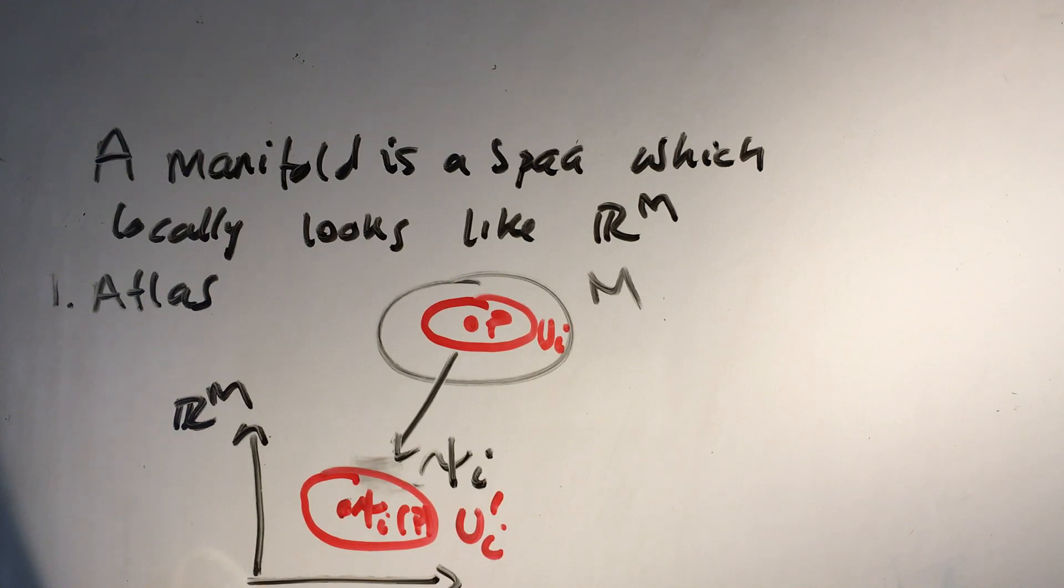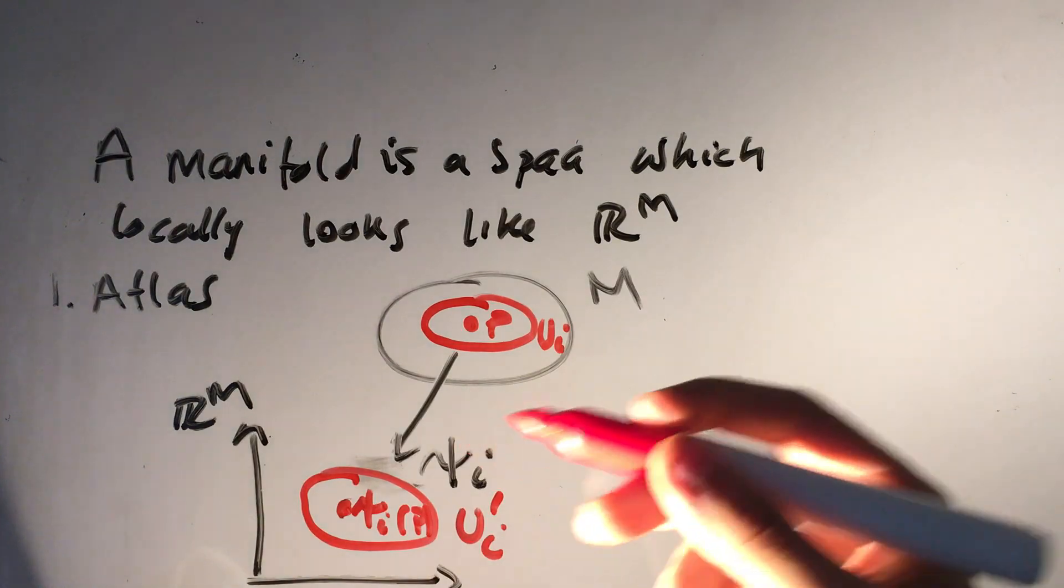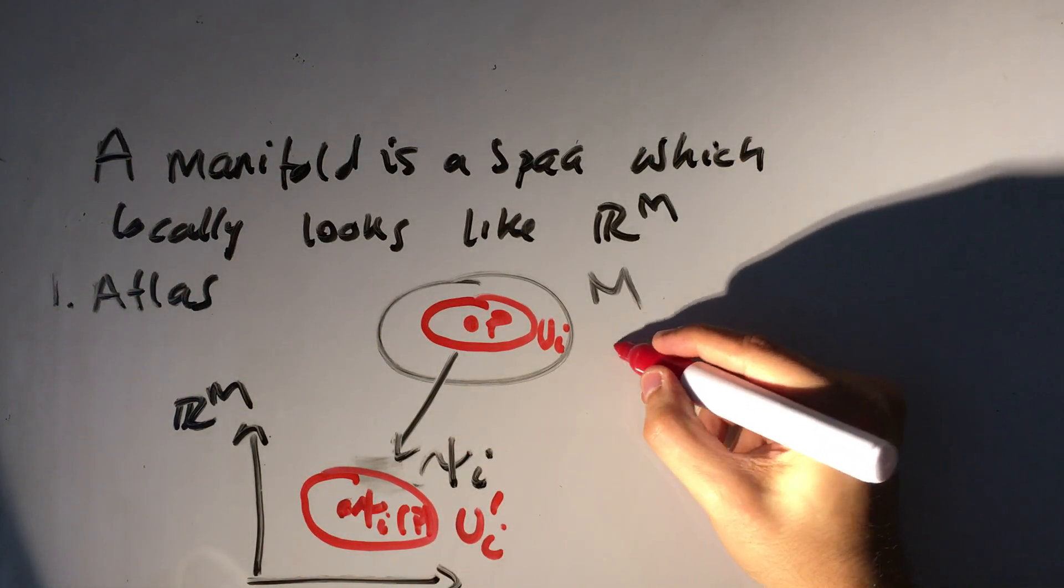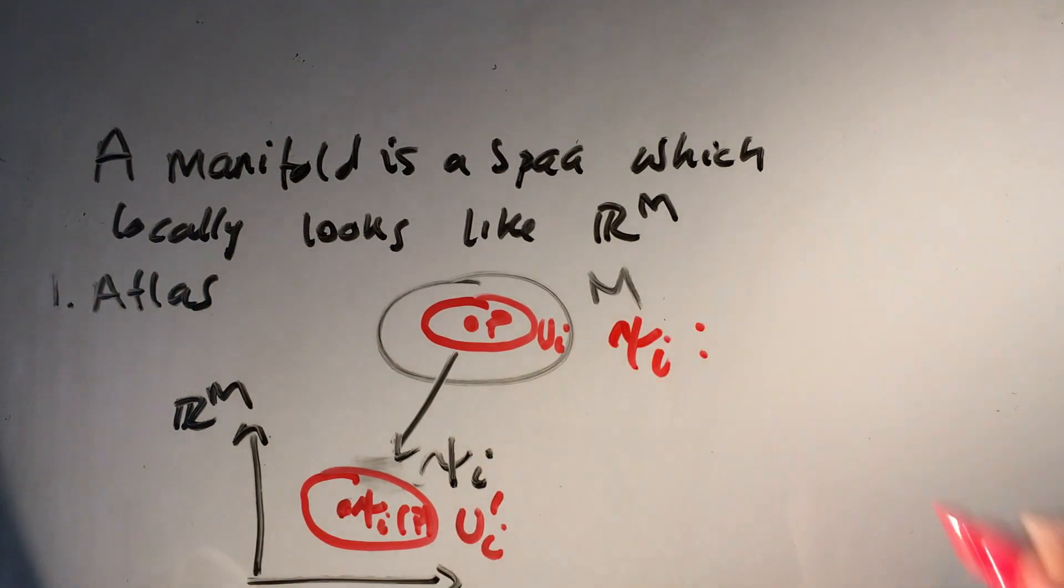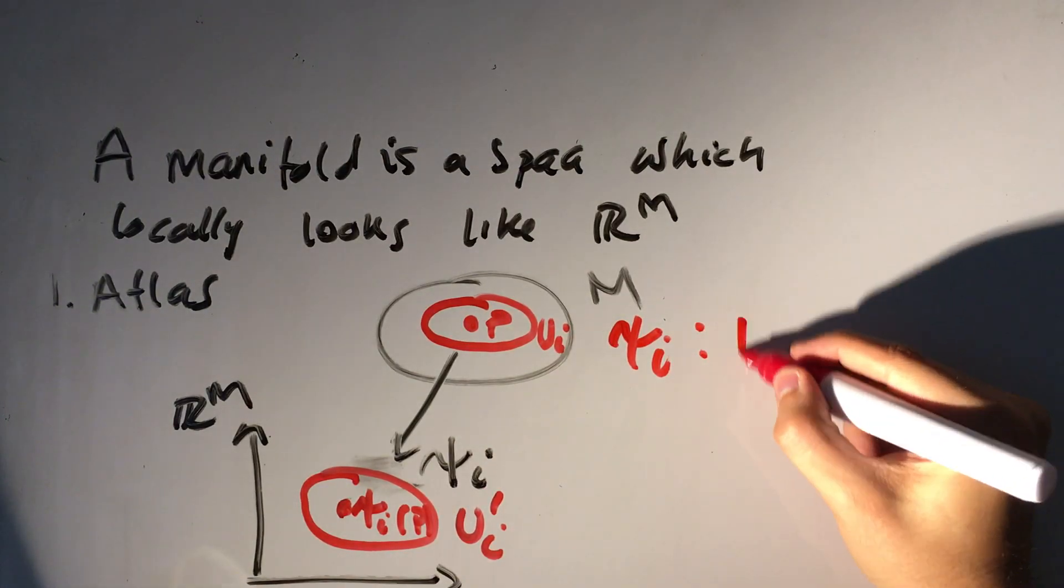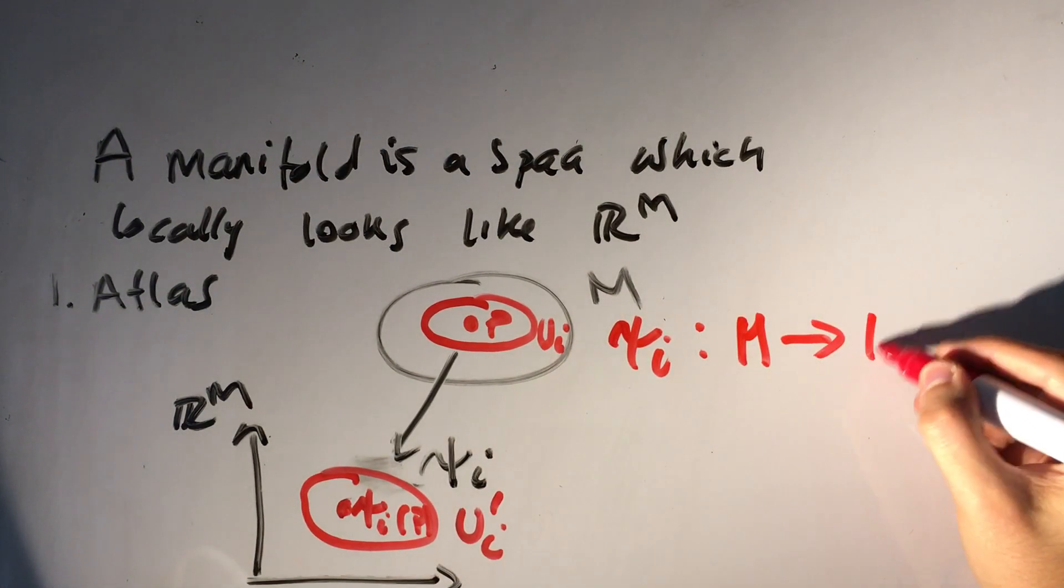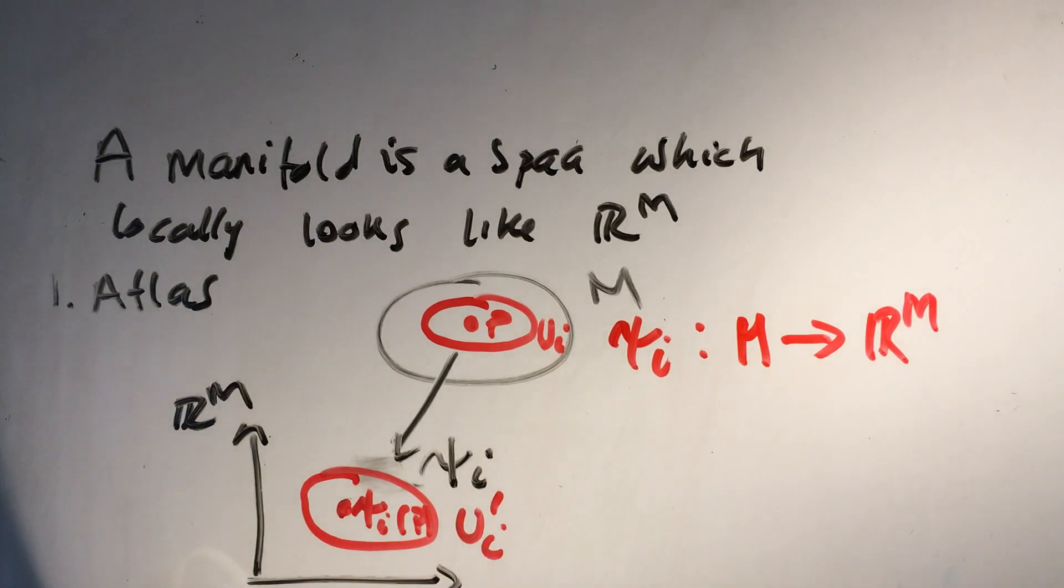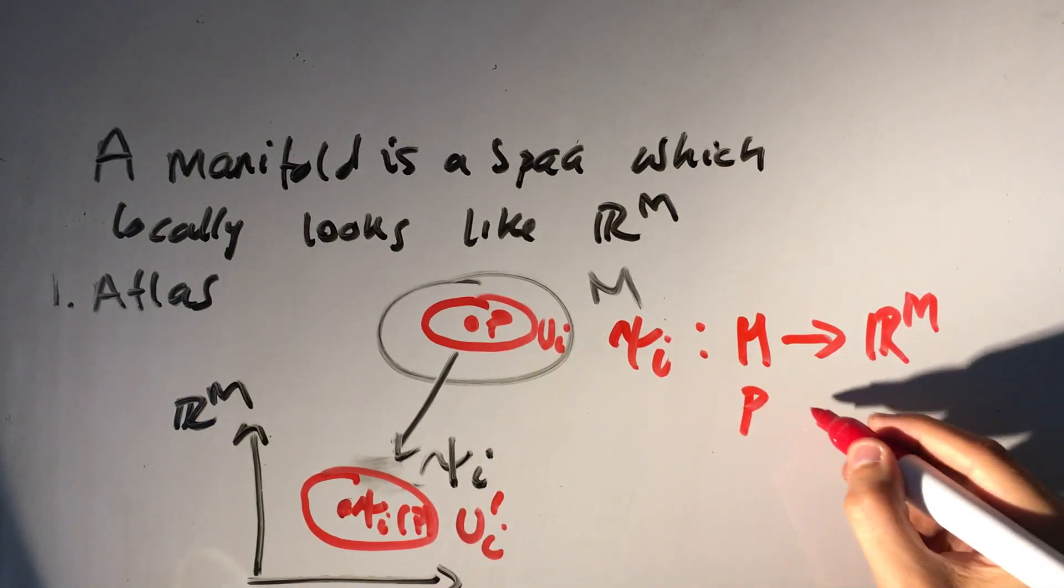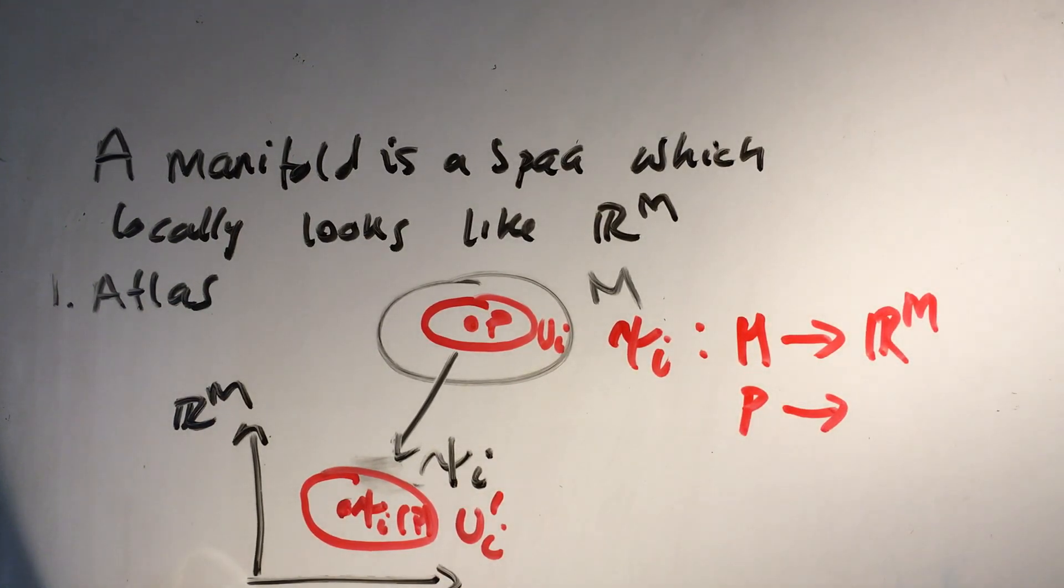Now, let's, I'm just going to quickly write this mapping in a more formal way. So ψ_i maps the manifold M to the real corner space R^M, whereas it takes point P to the point in real corner space M to the real corner space.